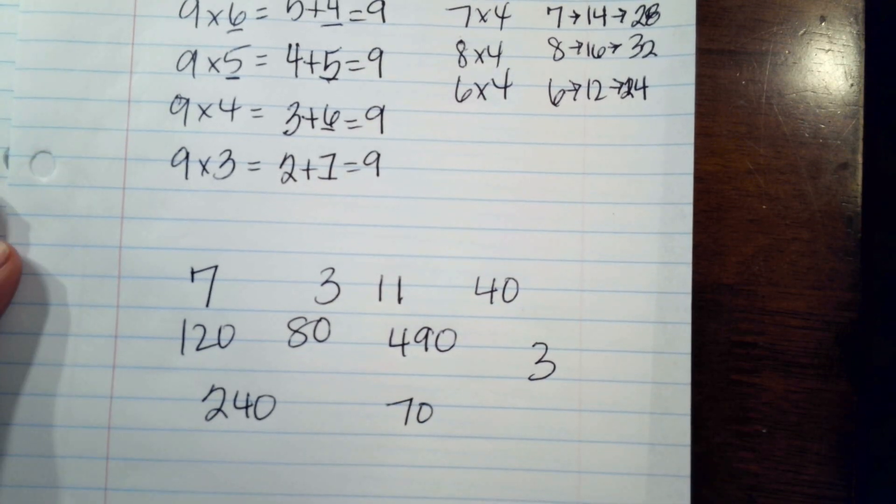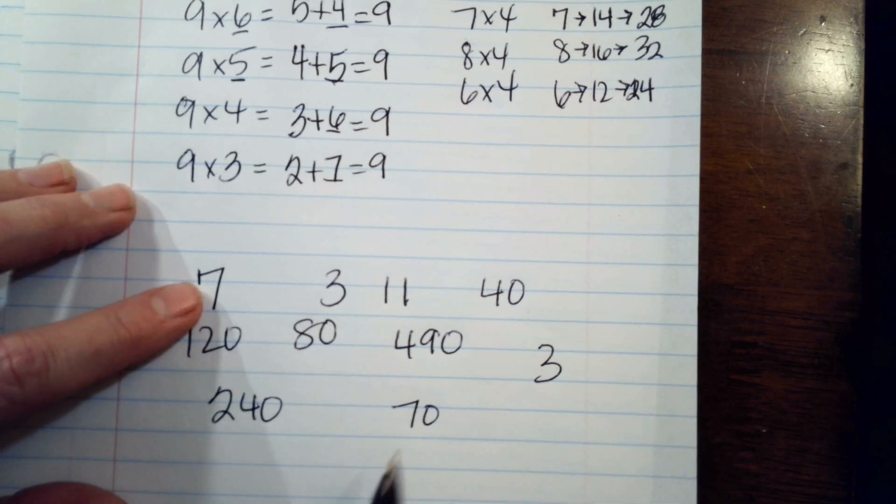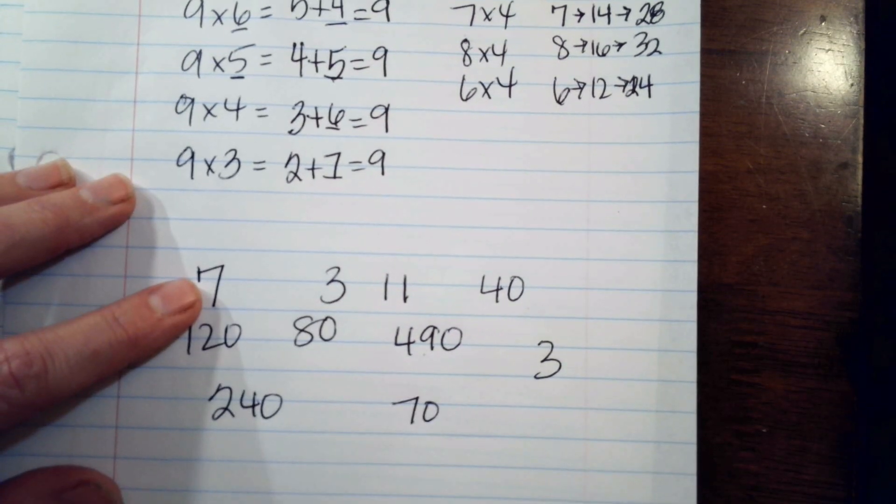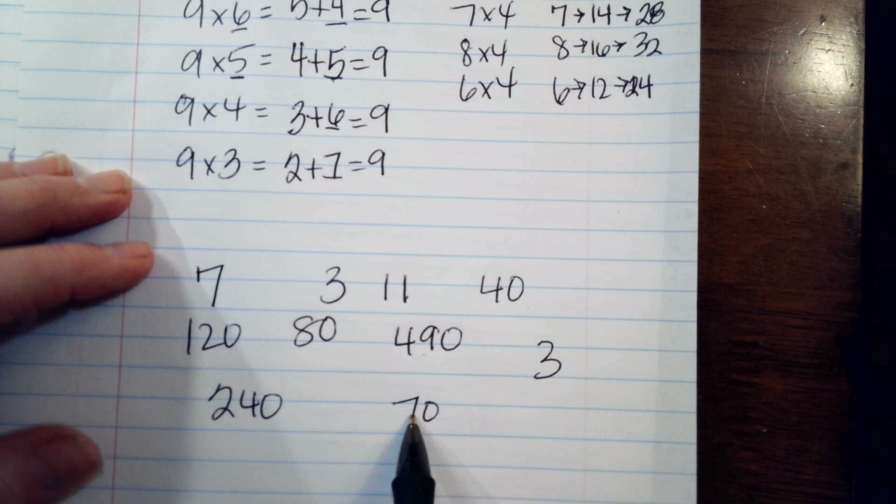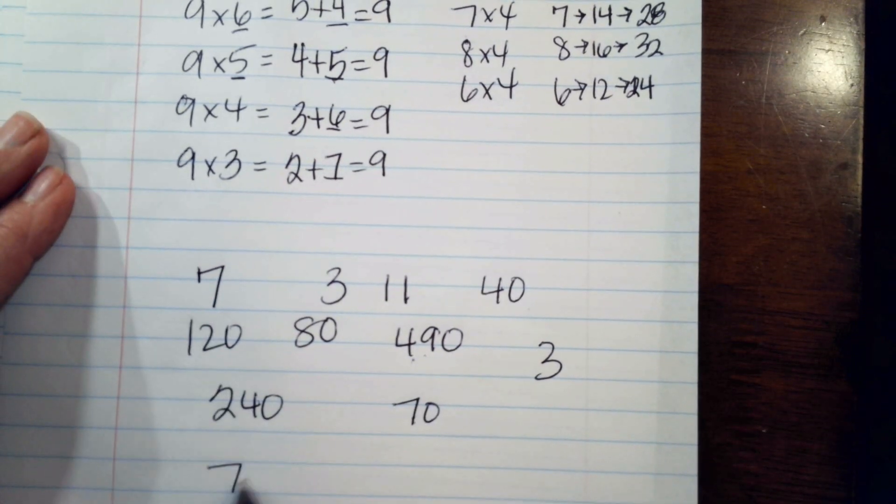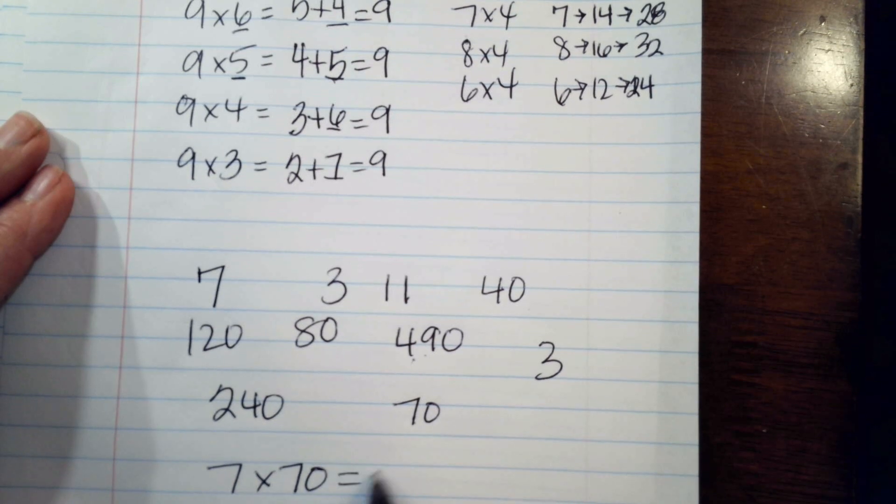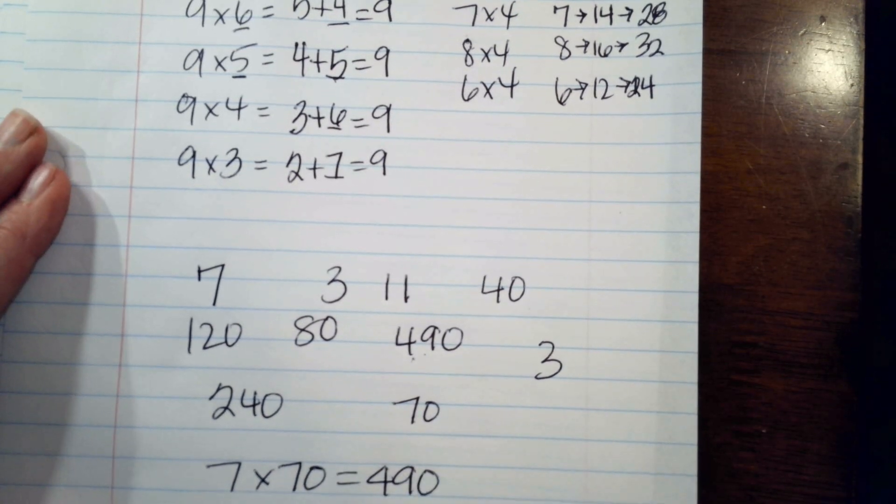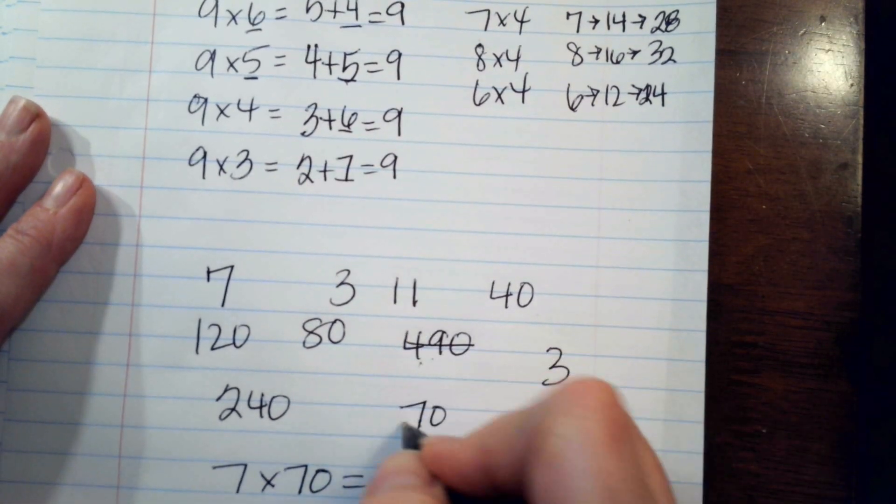So, I know seven times seven is forty-nine. That pops out at me, because I know seven, seven, and forty-nine belong together. So, I'm going to see, seven times seventy, does that equal four ninety? Yes. So, these ones are done.